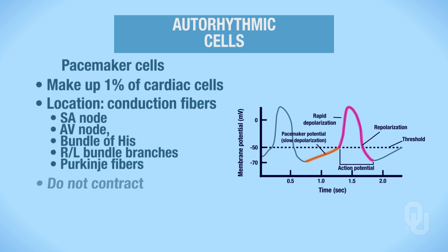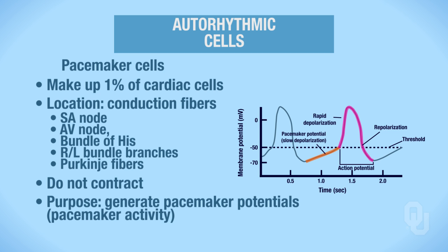Autorhythmic cells do not contract — they are not contractile cells, so they are not called myocytes. The purpose of the autorhythmic cells is to generate pacemaker potentials, or pacemaker activity. When the pacemaker activity is generated, that will set the pace for the heart. In other words, the pacemaker cells set the heart rate. When pacemaker cells initiate and conduct these pacemaker action potentials, that is going to spread through the conduction system and to the cardiac contractile cells, which we will discuss in a separate video.